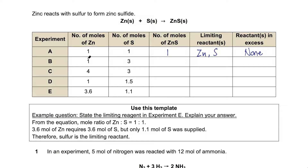Experiment B: I have one mole of zinc and three moles of sulfur. One mole of zinc only requires one mole of sulfur, but I have three, so sulfur is in excess. Zinc is the limiting reactant. We use the limiting reactant to calculate the amount of product that can be formed, so one mole of zinc sulfide will be formed, and sulfur is the reactant in excess.